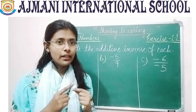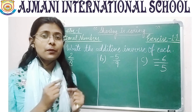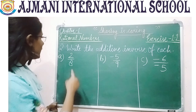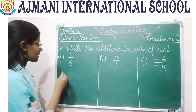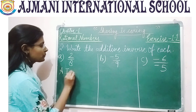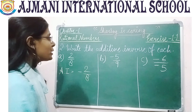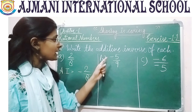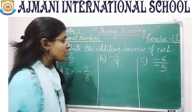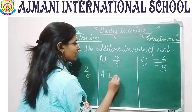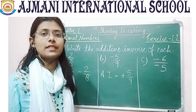First, figure out whether the rational number is positive or negative. In the first case, 2 by 8 is positive, so its additive inverse is negative: minus 2 by 8. Moving to part B, which has a minus sign — 5 by 9 is negative, so the additive inverse of minus 5 by 9 is plus 5 by 9. Writing just 5 by 9 is also considered correct.